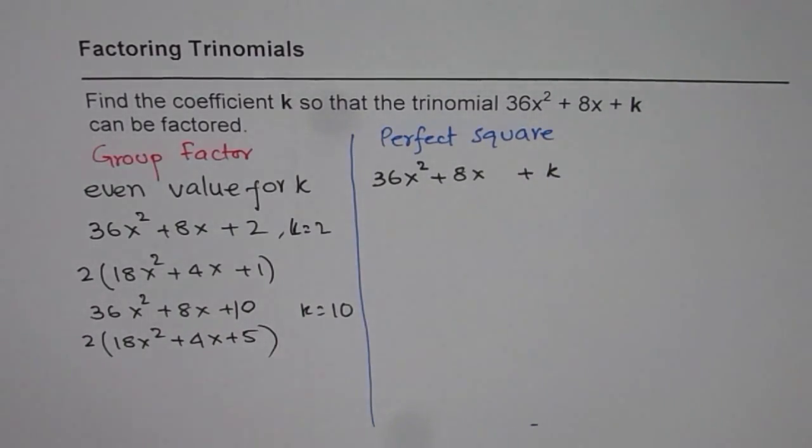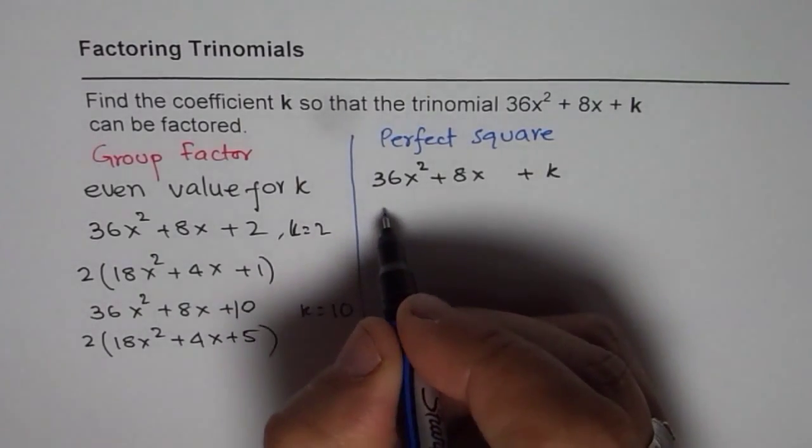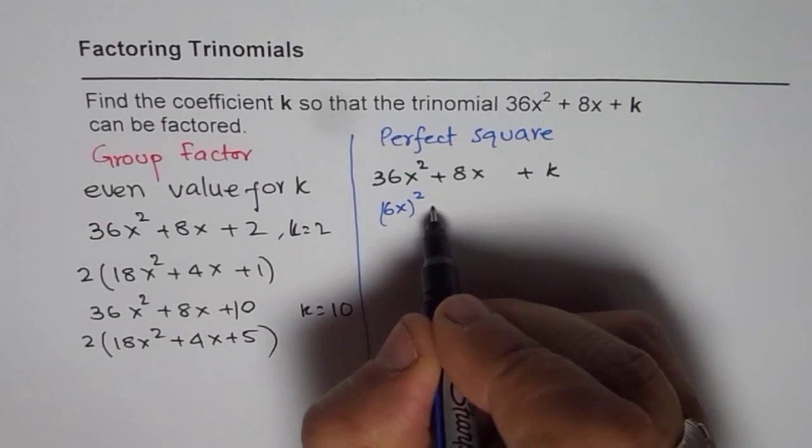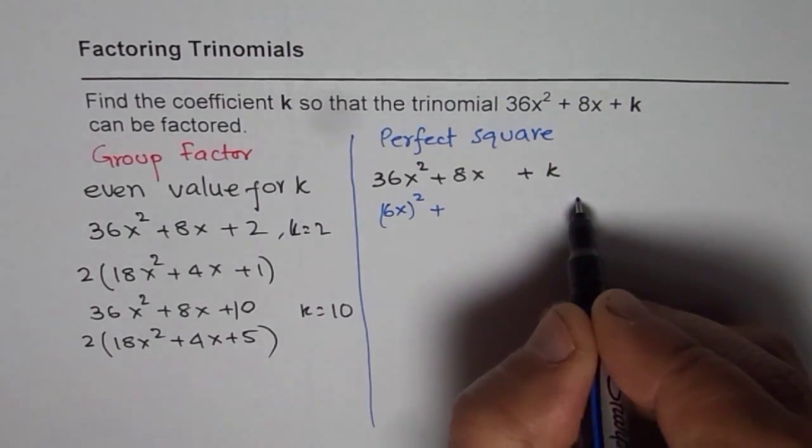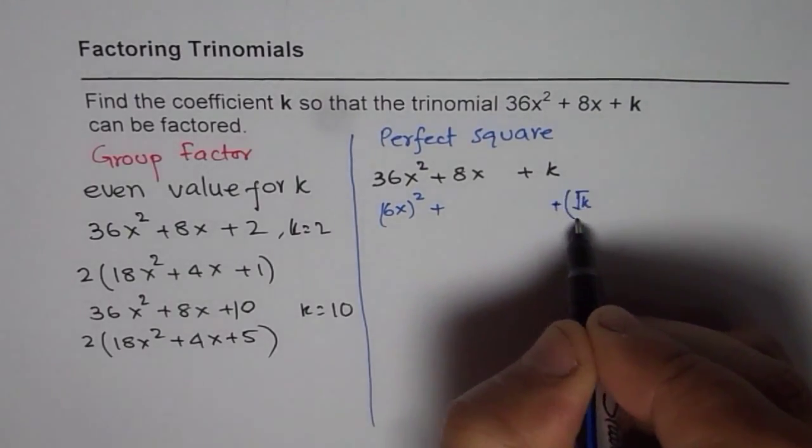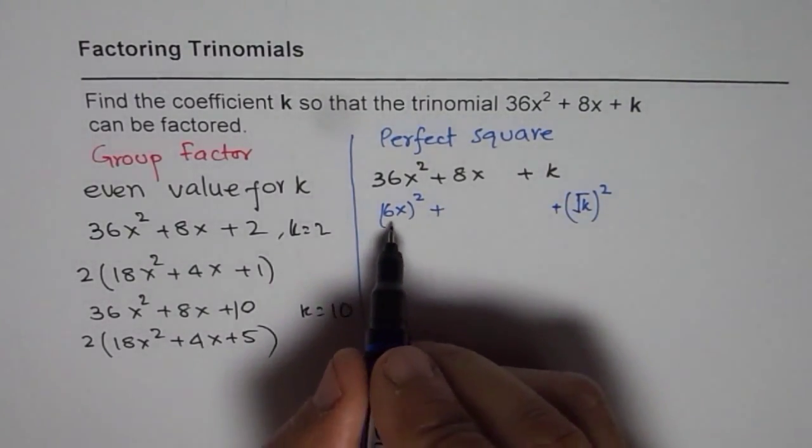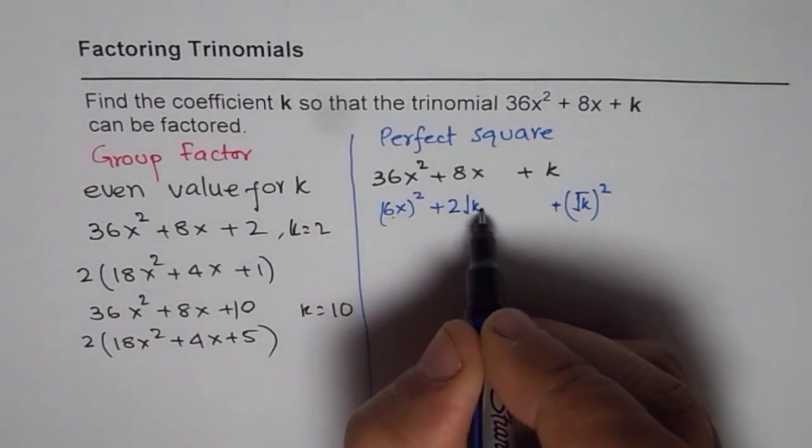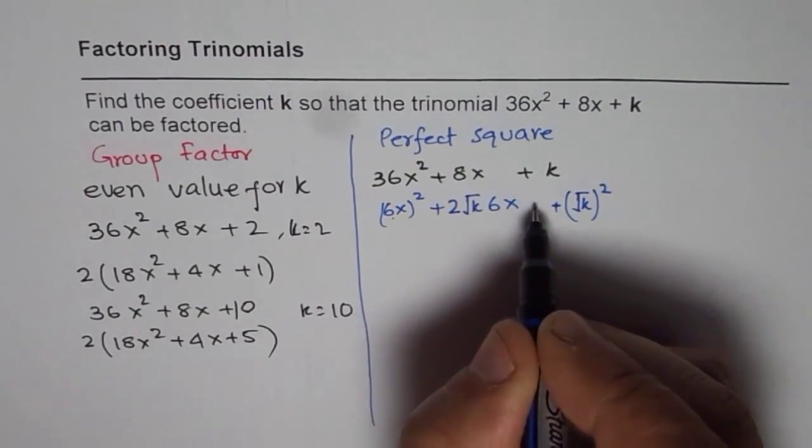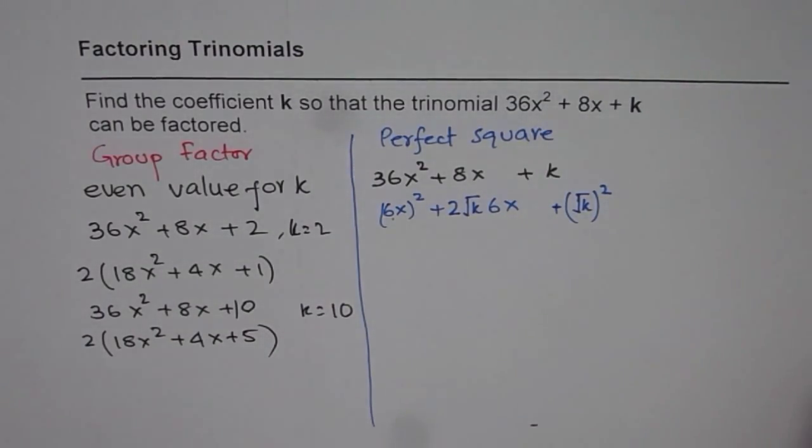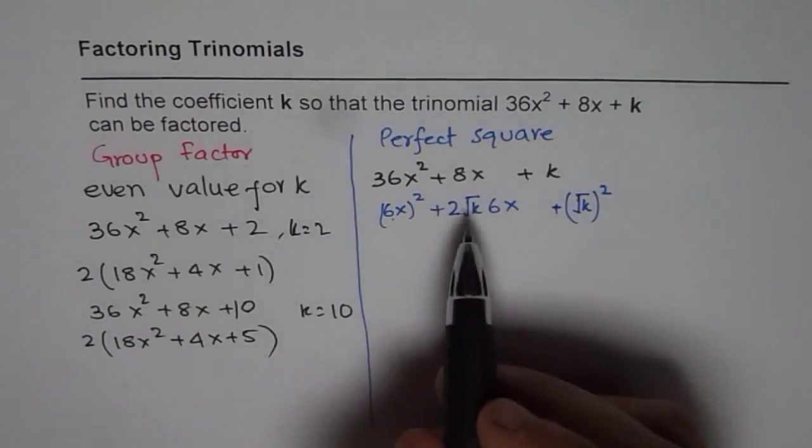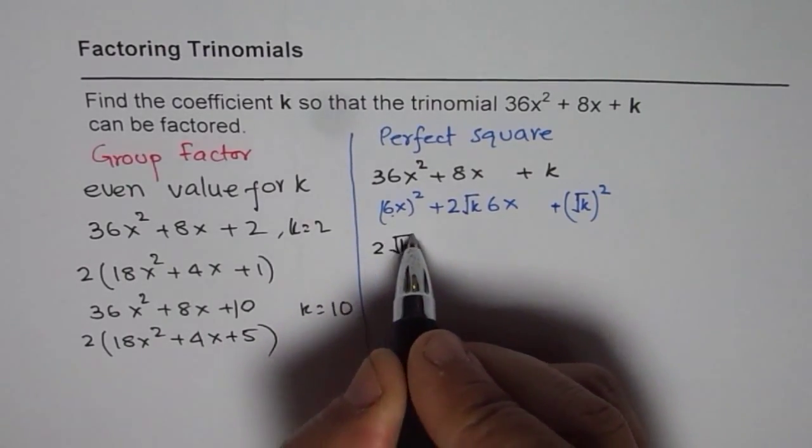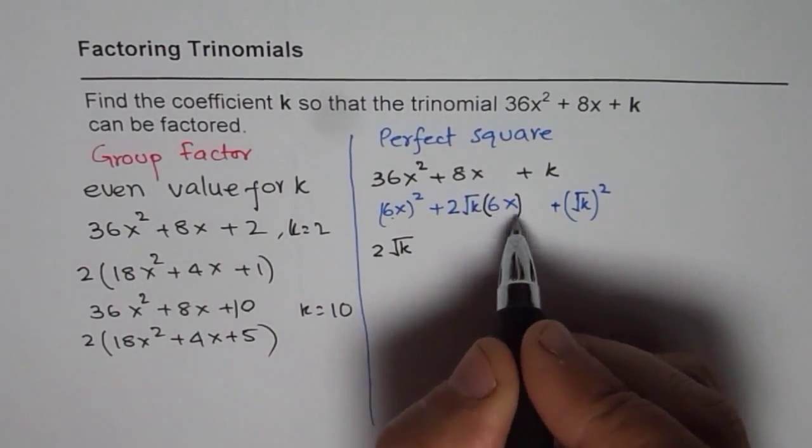Perfect square means we need to write these terms as this could be written as (6x)², and square root of k squared, and the center term is product of these 2 times 2. So 2 times square root of k times 6x. So that becomes the center term. Now for a perfect square, we can now find the value of k by equating 2√k times 6x equals to 8x.